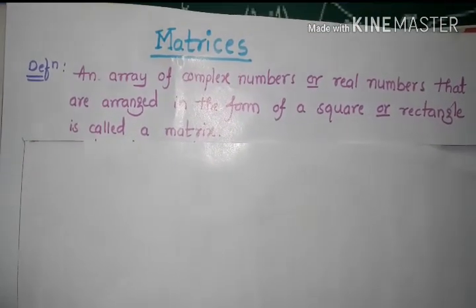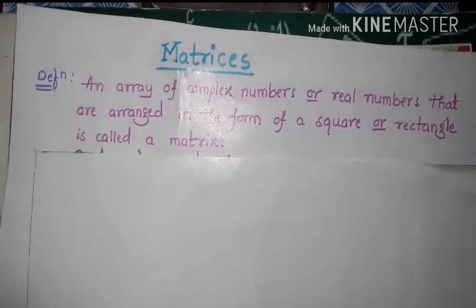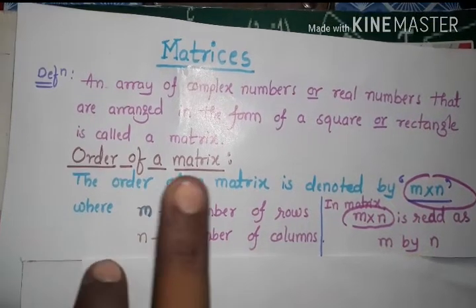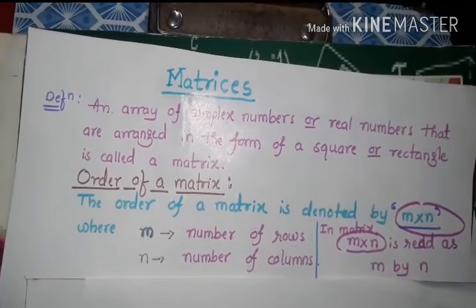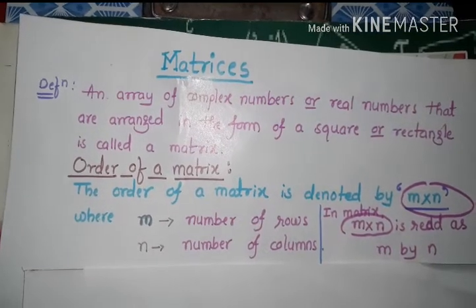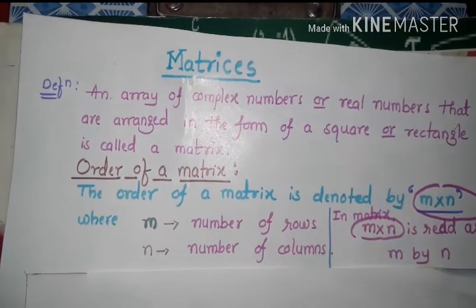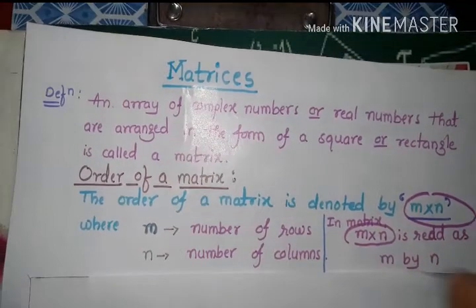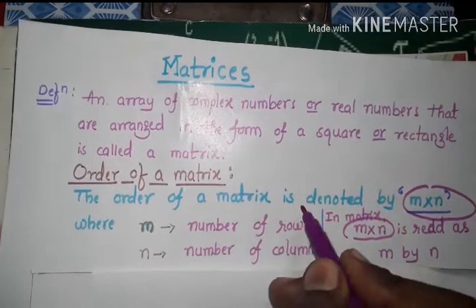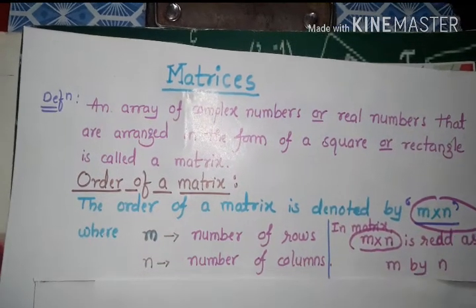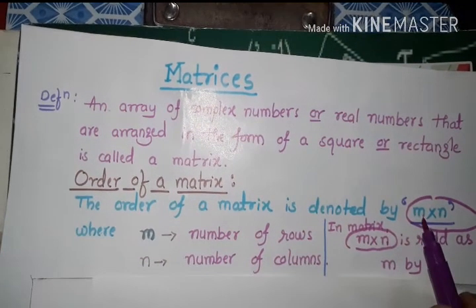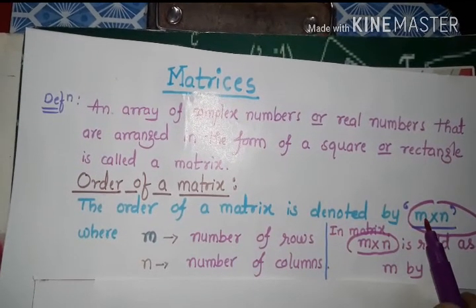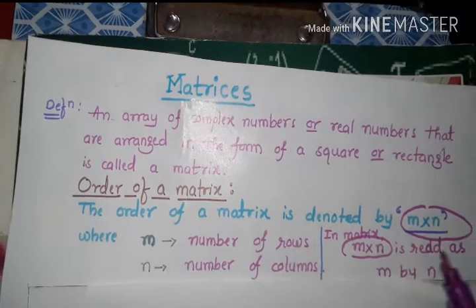Next concept: order of a matrix. A matrix always has an order - there is no matrix without an order, okay? The order of a matrix is denoted by m by n. It will be read as m into n, or m by n.